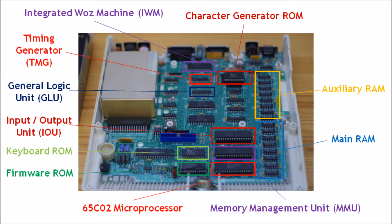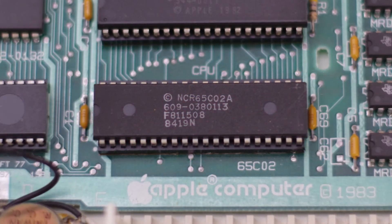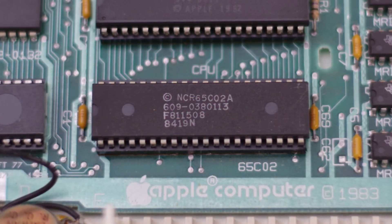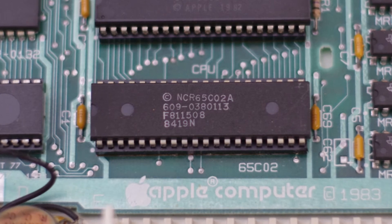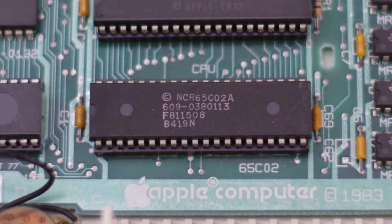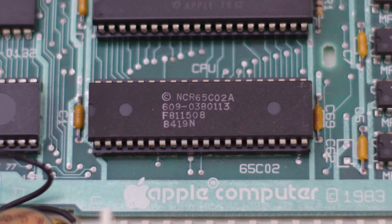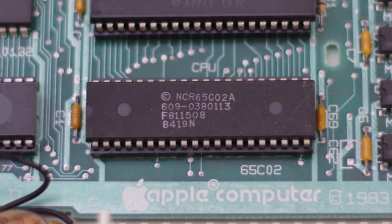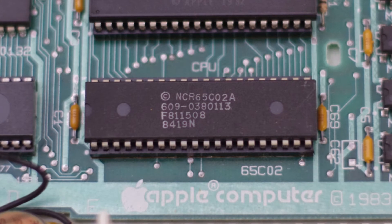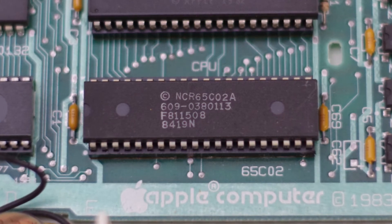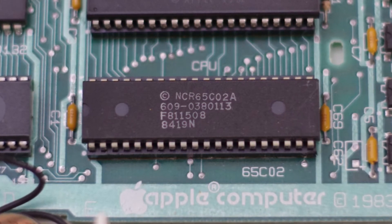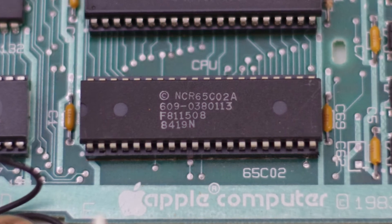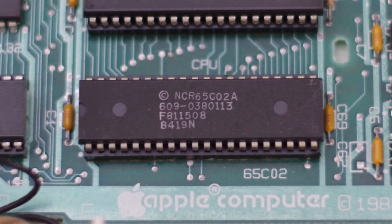Let's take a closer look at these components. The 65C02 microprocessor: the CPU on the Apple IIc is the 65C02 microprocessor. The 65C02 is a CMOS version of the 6502, which is an 8-bit microprocessor with a 16-bit address bus. It runs at 1.023 MHz and performs up to 500,000 8-bit operations per second.